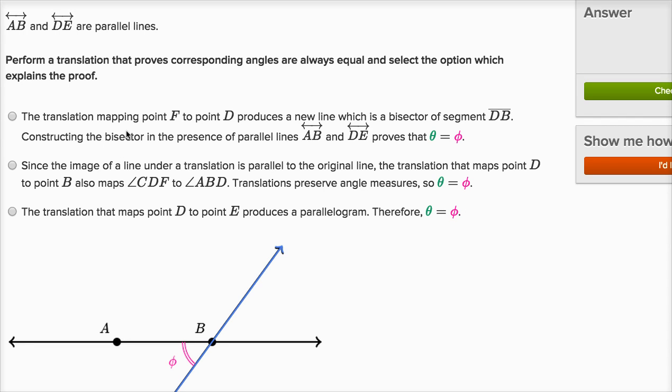This right here is a screenshot of the line and angle proofs exercise on Khan Academy. I thought we would use this to get some practice with line and angle proofs. What's neat about this is it uses translations and transformations as ways to actually prove things.